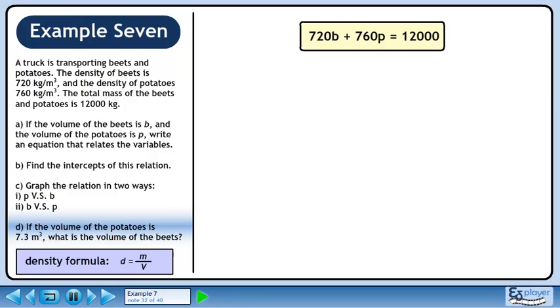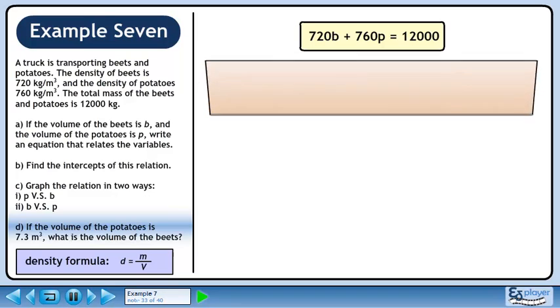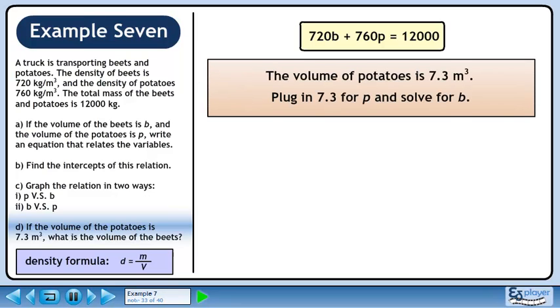Moving on to part d, if the volume of the potatoes is 7.3 cubic meters, what is the volume of the beets? The volume of the potatoes is 7.3 cubic meters. Plug in 7.3 for p and solve for b.